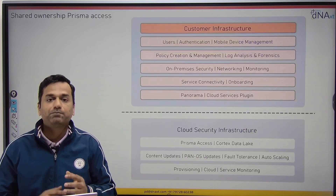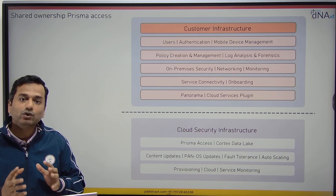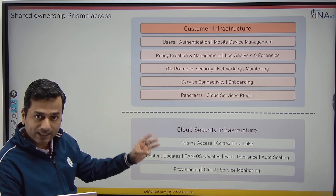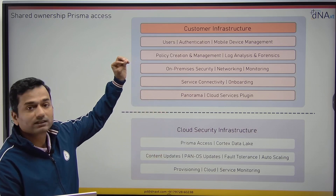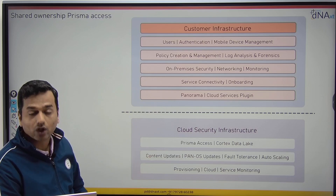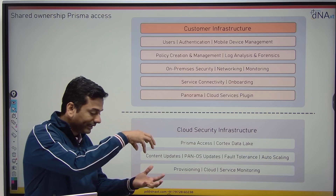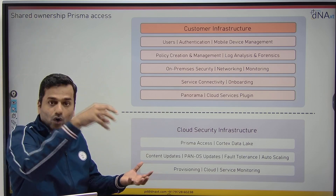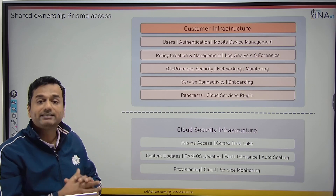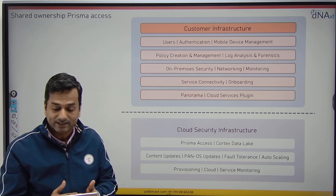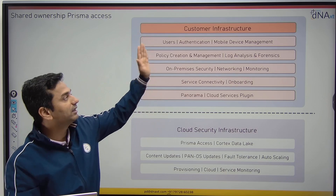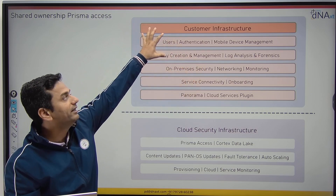Now, the responsibility matrix — when it comes to Prisma Access, who owns what? Customer infrastructure, users, authentication such as Active Directory and LDAP, mobile device management, and everything related to policy creation and management should be managed by the customer. On-premises device security, networking, monitoring of the on-premises network, service connection, onboarding of Prisma Access, and the Panorama cloud plugin — all of this resides in and is managed by the customer infrastructure.